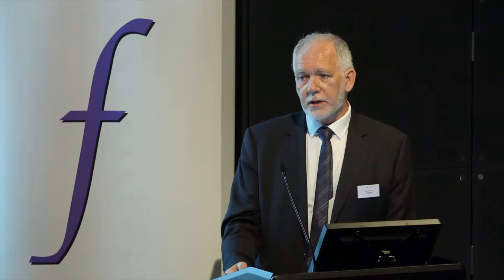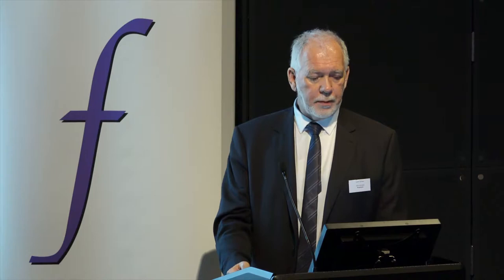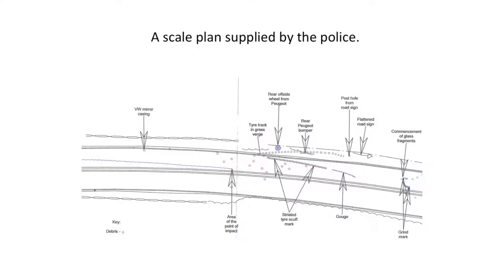Here is just an example of a Google Earth overhead image. And this is an extract from an ordnance survey map that we might use. These have to be scaled so that they provide the basis for the ground plan. And in this example, we had a scale plan which was supplied by the police.